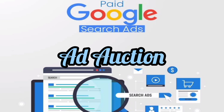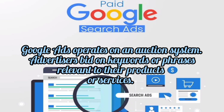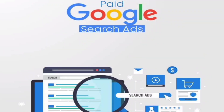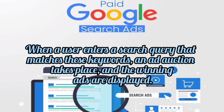Ad Auction: Google Ads operates on an auction system. Advertisers bid on keywords or phrases relevant to their products or services. When a user enters a search query that matches these keywords, an ad auction takes place and the winning ads are displayed.